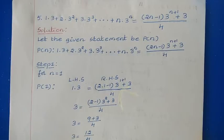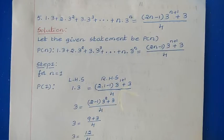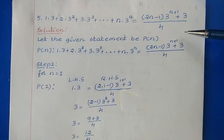In this video, I am explaining the solution of exercise 4.1, chapter 4, principle of mathematical induction, question number 5 and 6. Question number 5: 1×3 + 2×3² + 3×3³ + ... up to N×3^N is equal to (2N−1)×3^(N+1) + 3, divided by 4. This is our given mathematical statement.